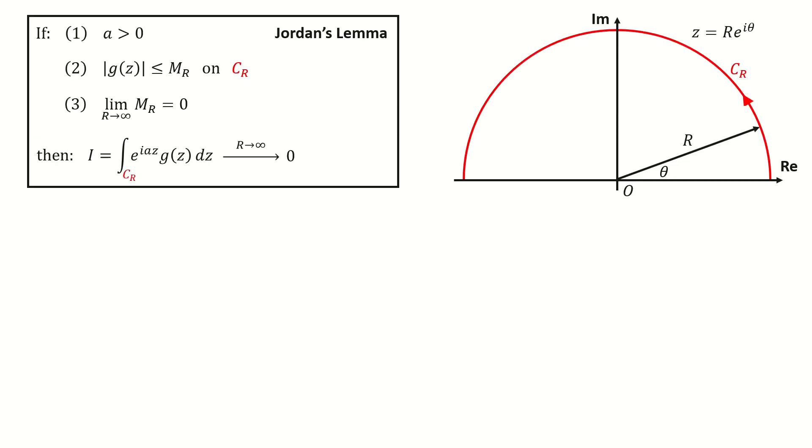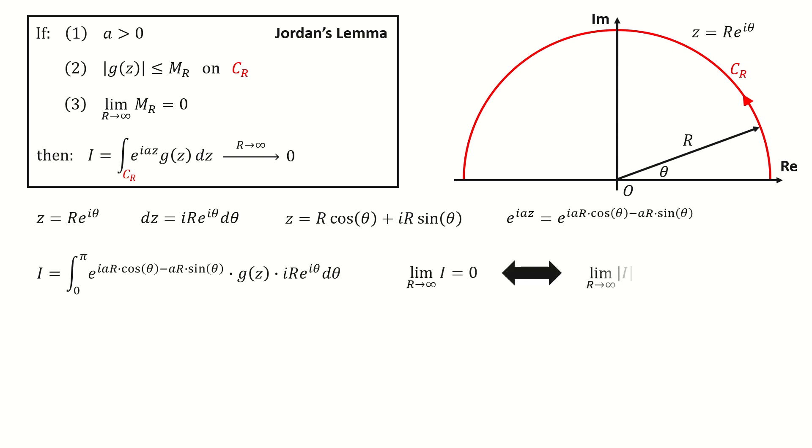Now we are ready to prove Jordan's Lemma. First, we write z into polar form. And then we take the derivative to find dz. And next, we write z using Euler's formula. So this exponential factor can be written into this form. Then we plug in the substitution. And we know to prove the limit of I is 0, it's equivalent to prove the limit of the modulus is 0.